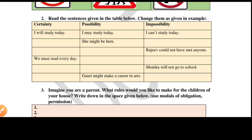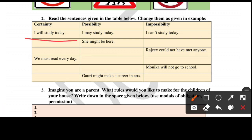For example: certainty — 'I will study today' (definitely happening). Possibility — 'I will probably study today' (maybe). Impossibility — 'I cannot study today' or 'I will not study today' (not happening).